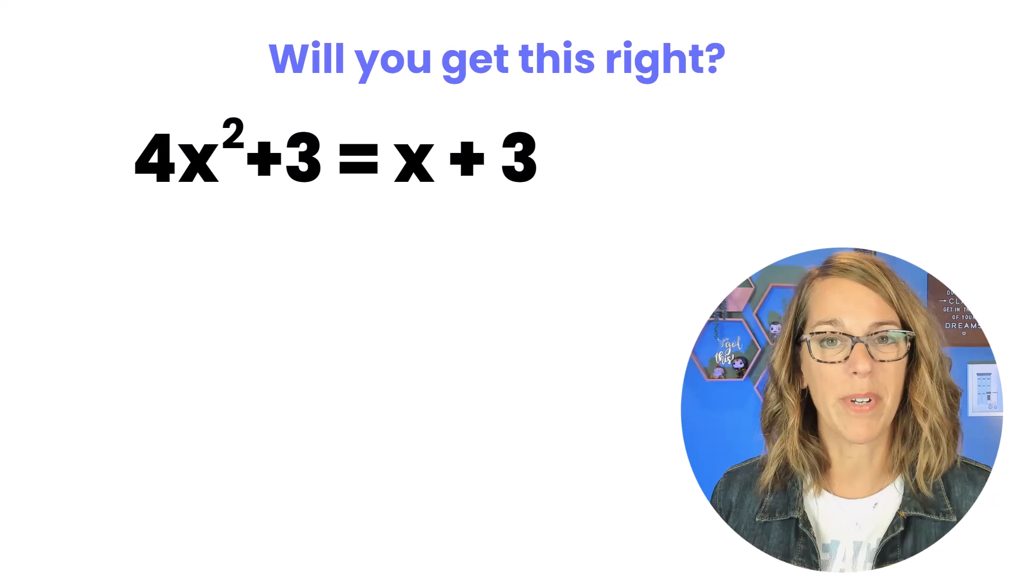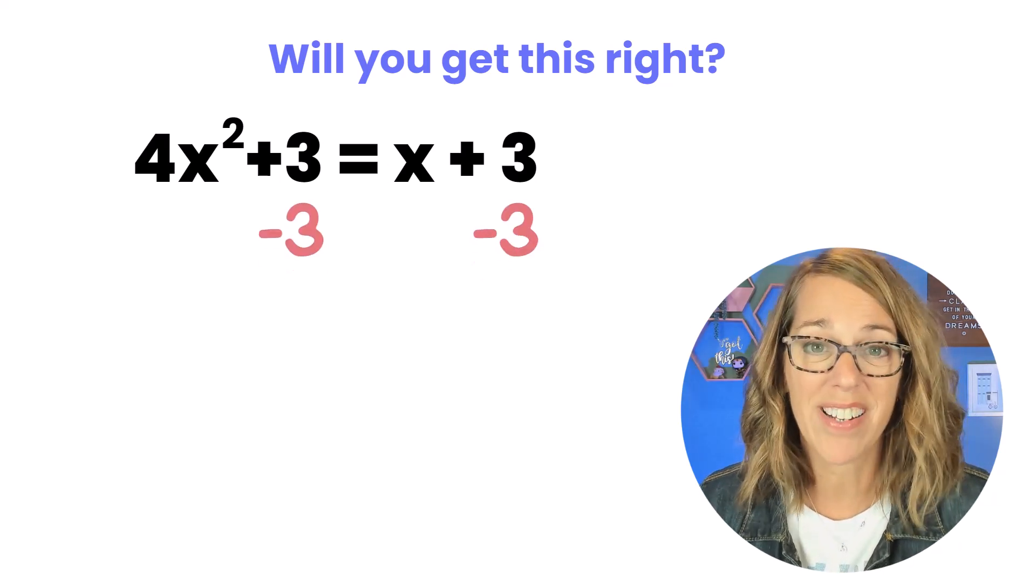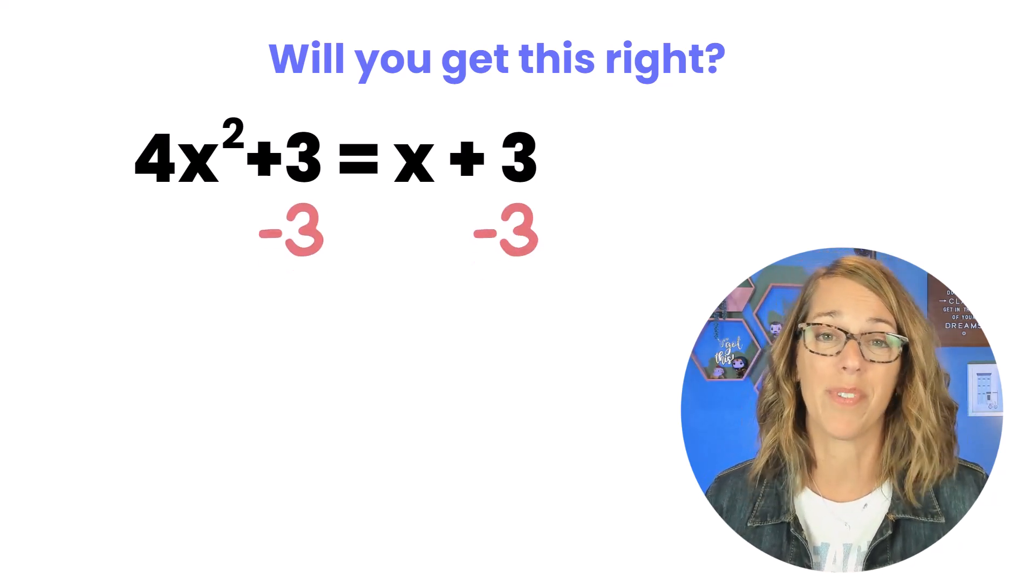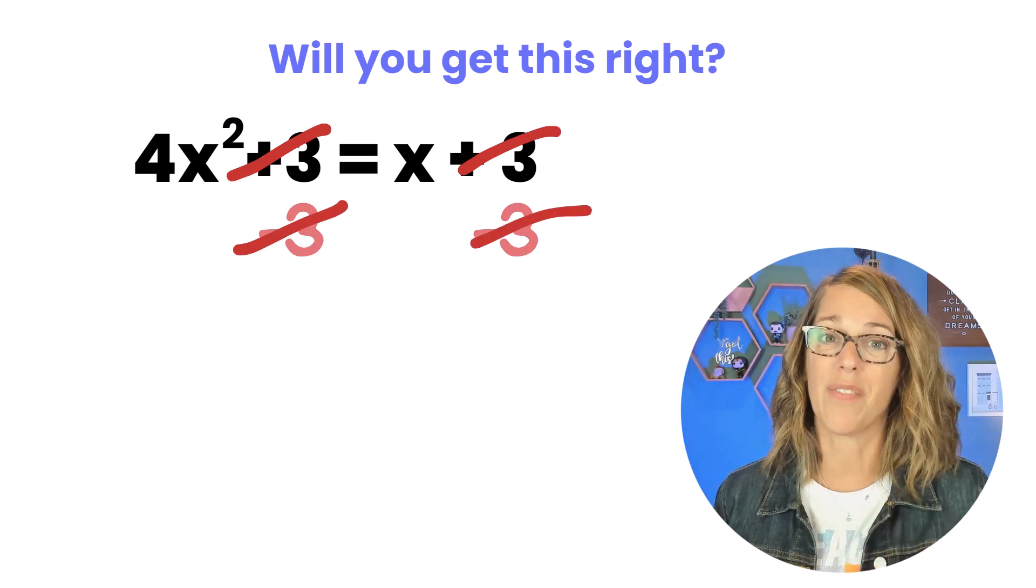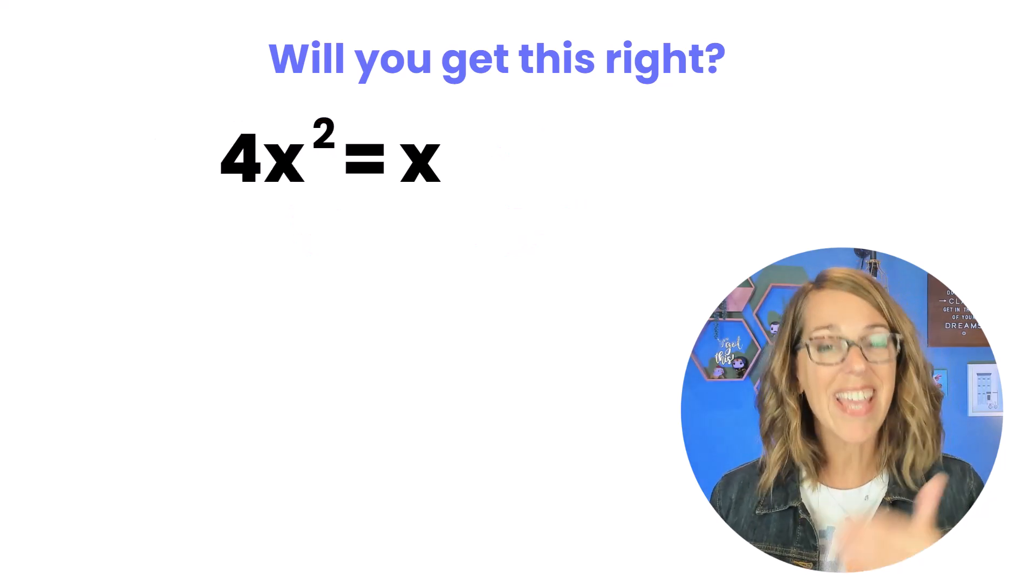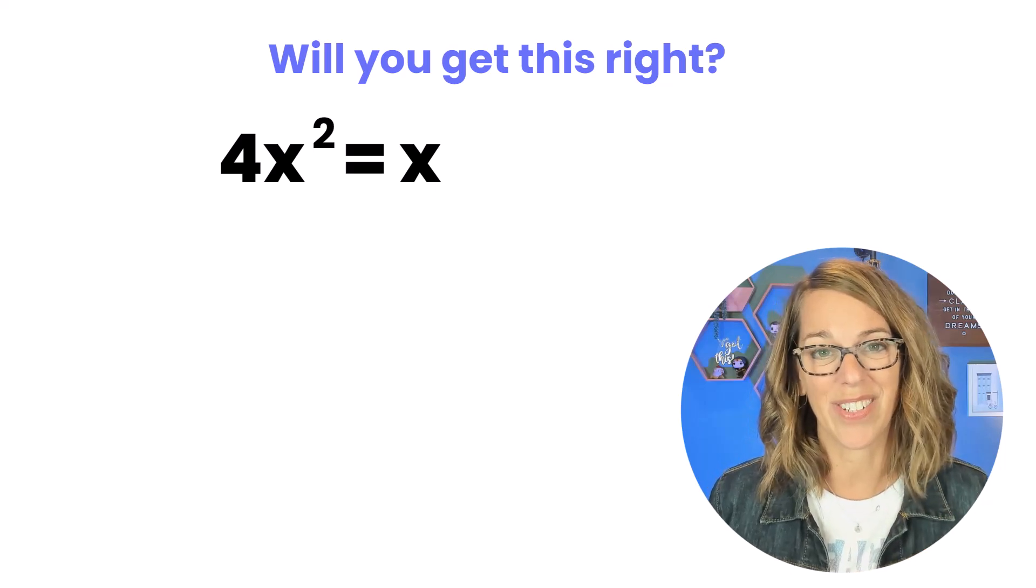So the very first thing that you might want to do, and you would be correct, is to subtract 3 from both sides. If we do this we end up with just the 4x² on one side and the x on the other side.